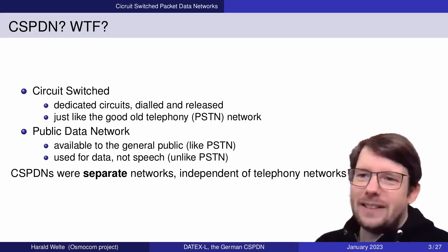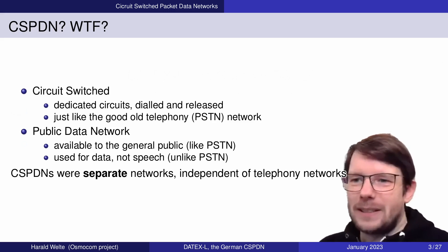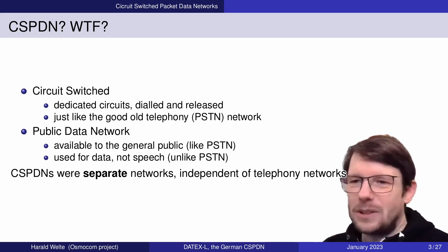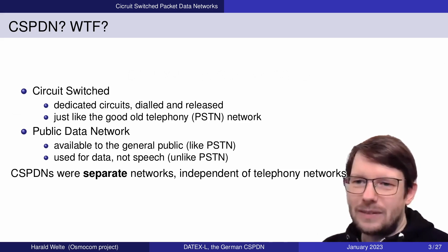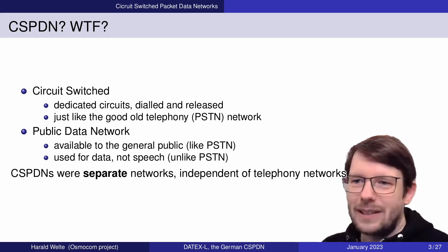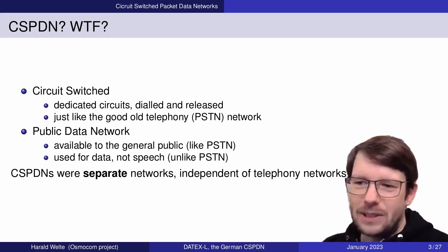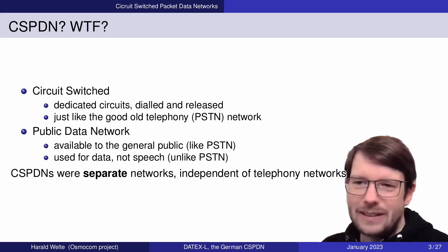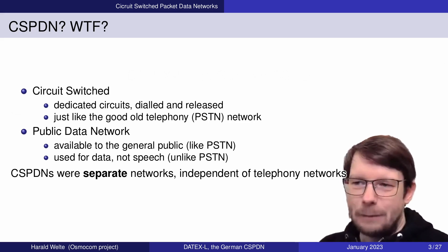So what is a CSPDN, a circuit-switched public data network? The name leads us to two different terms with well-known meanings. The first is circuit-switched: dedicated circuits are established and released, just like in the telephone network. We make a call, the call is established, and we have an end-to-end dedicated resource — the data call in the CSPDN network — and it can be released by either side at a later point.